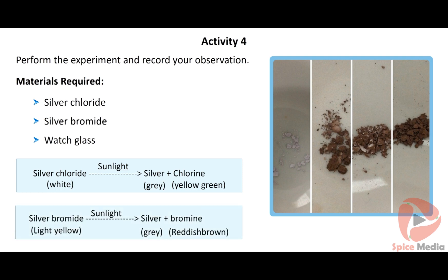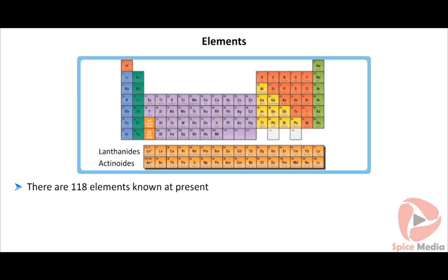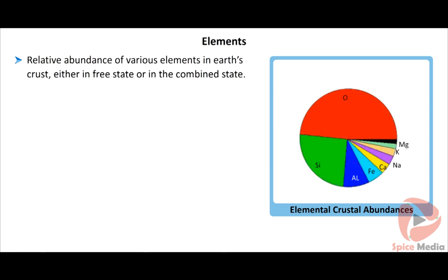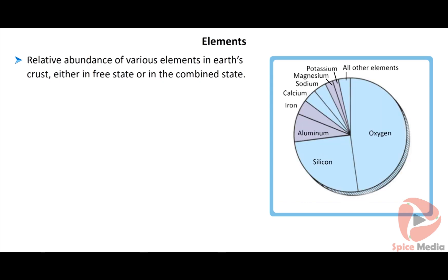There are 118 elements known at present, out of which 92 elements occur in nature and the remaining 26 have been prepared in laboratories by artificial methods. It is shown in pink color in the periodic table. However, only 112 elements have been authenticated by International Union of Pure and Applied Chemistry and are allotted symbols. The relative abundance of various elements in Earth's crust either as free state or in the combined state are given as pie diagram. In Earth's crust, oxygen is the most abundant element followed by silicon. These two make up three quarters of the Earth's crust.